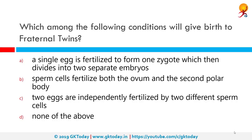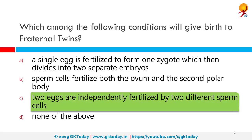Which among the following conditions gives birth to fraternal twins? The correct answer is that two eggs are independently fertilized by two different sperm cells. Twins can be monozygotic or identical, developing from one zygote which splits and forms two embryos, or dizygotic or fraternal, meaning each twin develops from a separate egg fertilized by its own sperm cell.